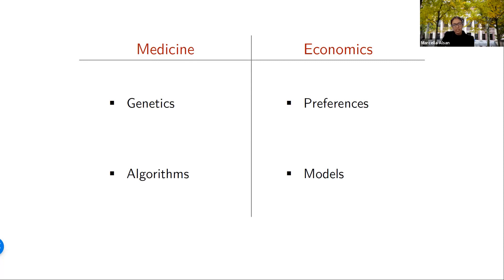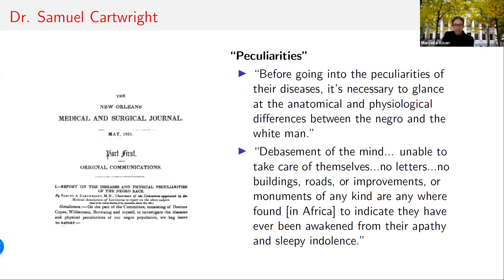We begin with medicine. A prominent example in the 19th century of using biological differences to justify unequal treatment — even slavery itself — was Dr. Samuel Cartwright. Cartwright has been described as a scholar fluent in several languages, including Greek, Hebrew, German, and Latin. He was a practitioner widely known and respected throughout the South, eventually becoming the assistant surgeon general under Jefferson Davis.